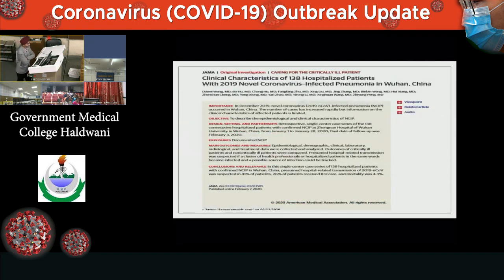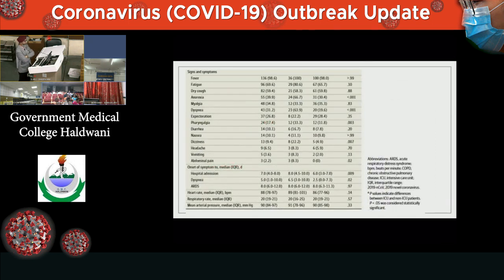A study published in JAMA examined the clinical characteristics of 138 hospitalized patients with 2019 novel coronavirus-infected pneumonia in Wuhan, China. Cases were taken from December through January. Of these 138 hospitalized patients, the mortality was only 4.3%. Twenty-six patients received ICU care. Clinical characteristics included fever, fatigue, and dry cough. The onset of symptoms to hospital admission was 7 days, to dyspnea was 5 days, and to ARDS was 8 days — meaning after about a week, the patient may develop ARDS and require ventilatory support.